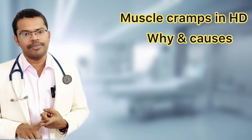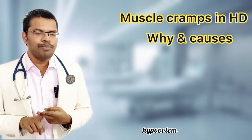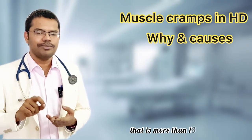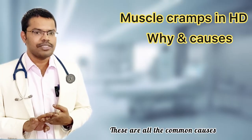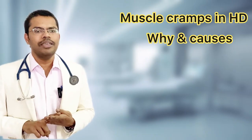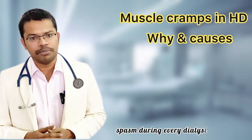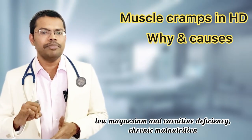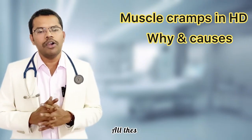In summary: muscle cramp is an involuntary painful contraction of the muscle, most commonly seen in the calf muscle. Why during dialysis? Because of hypotension, hypovolemia, and excessive ultrafiltration rate — more than 13 ml per kg per hour — these are the common causes. Apart from that, low sodium in the dialysate. If the patient is developing recurrent muscle spasm on every dialysis, check for low calcium, low magnesium, carnitine deficiency, and chronic malnutrition.